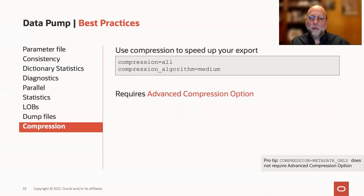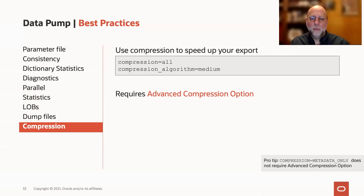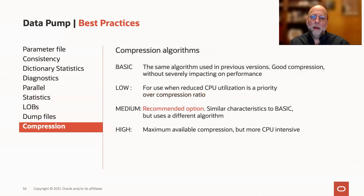Finally, for performance, you might want to use compression to speed up your export. Originally in 11.1 we were able to export with compression equal to all, for example. We've now added more compression algorithms in more recent versions. Our recommendation is to use compression algorithm equals medium. This does require the advanced compression option. There are four choices for compression algorithms: the basic one, which we started with back in 11.1 and 11.2; and starting in 12.1, you can specify low, medium, or high. Based on our testing, we recommend medium for most cases — it's going to give you good performance and good compression.